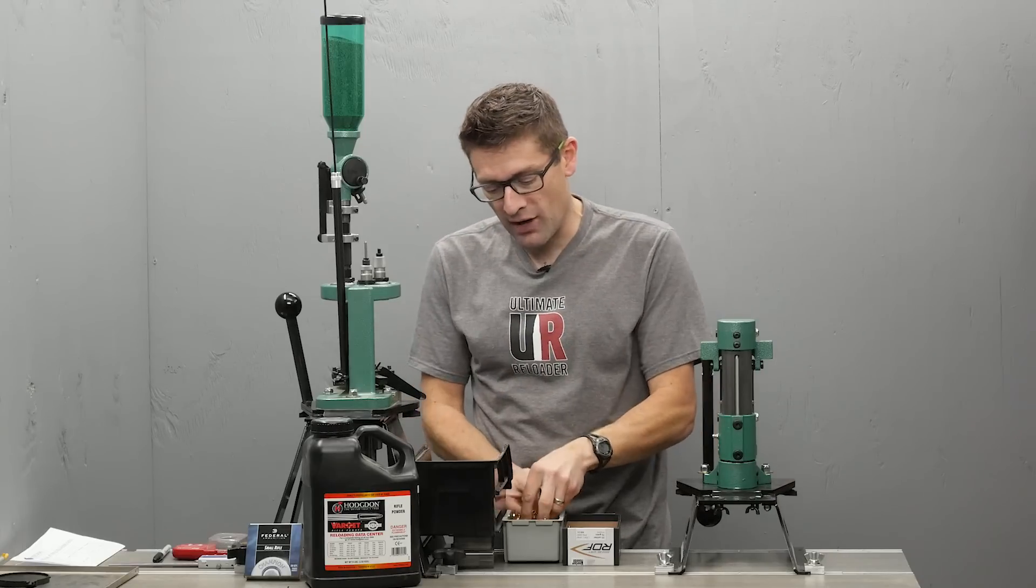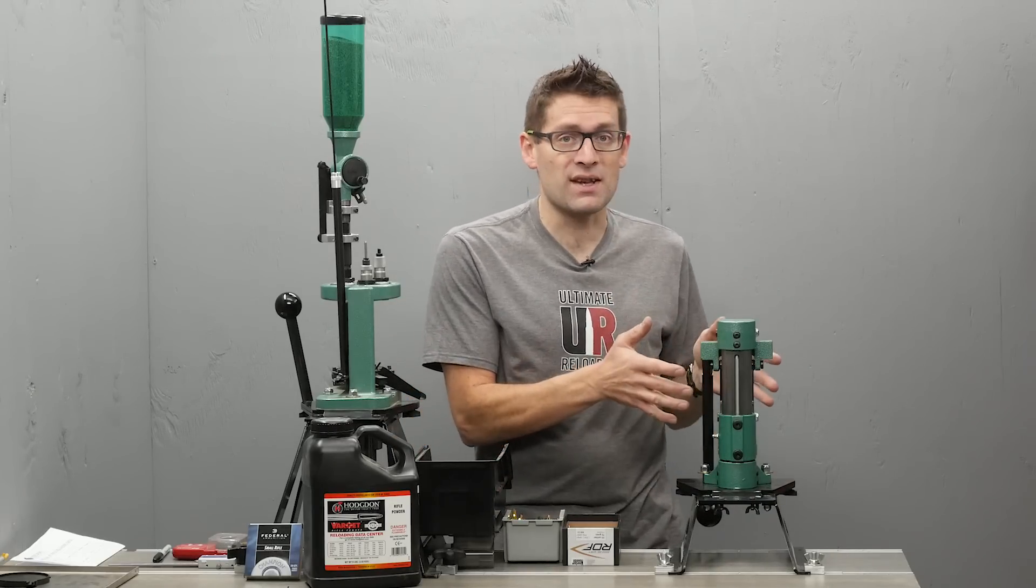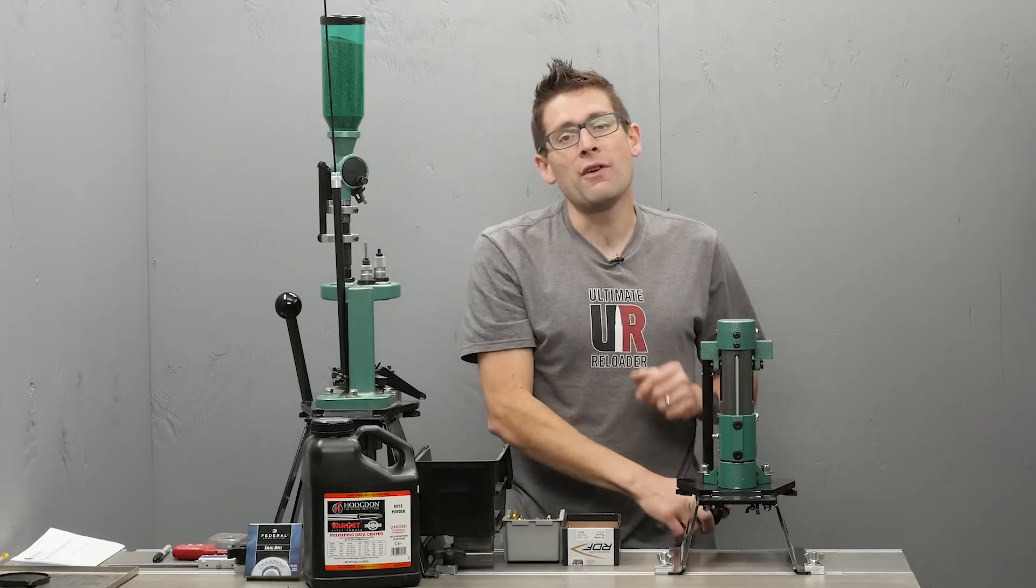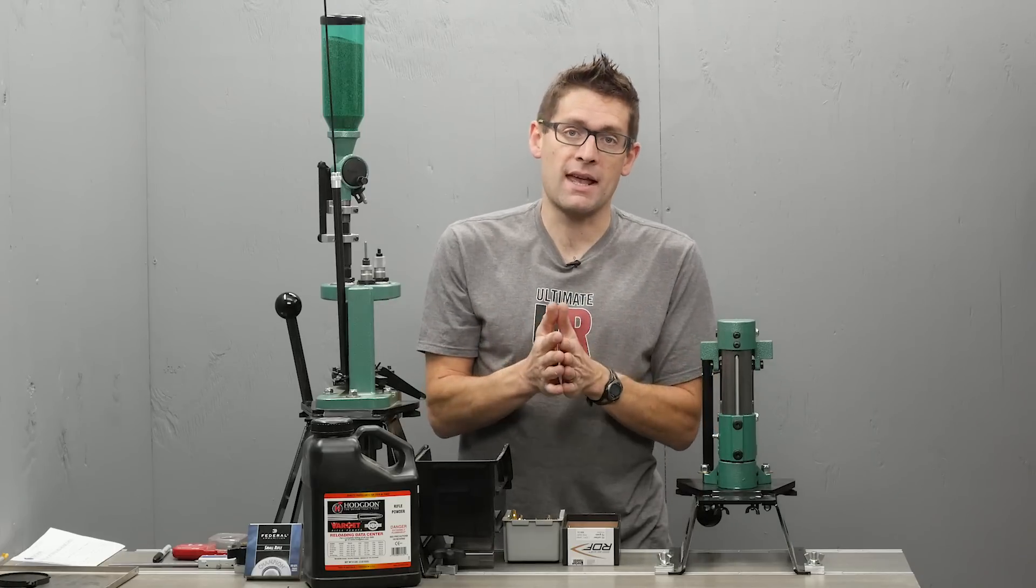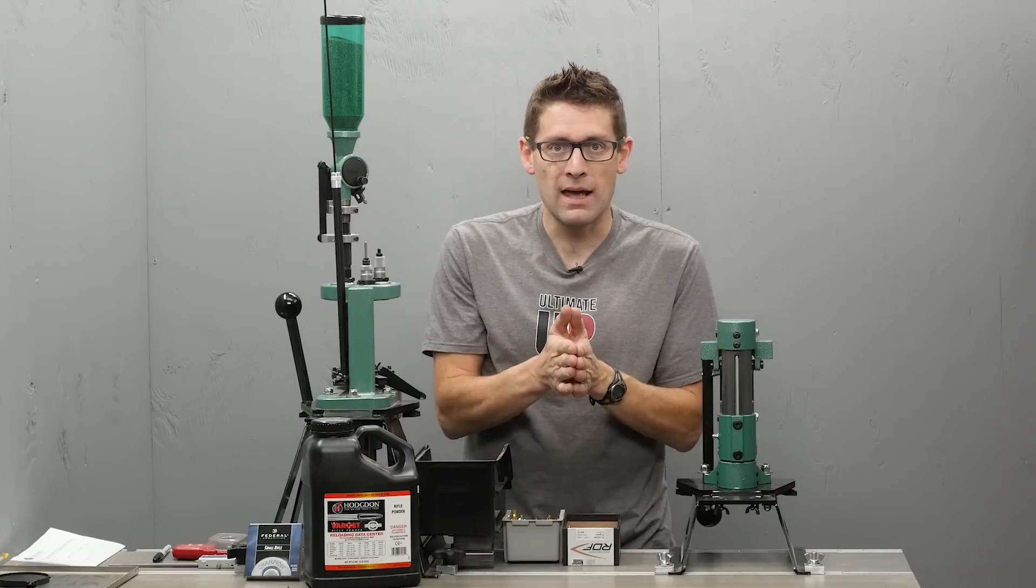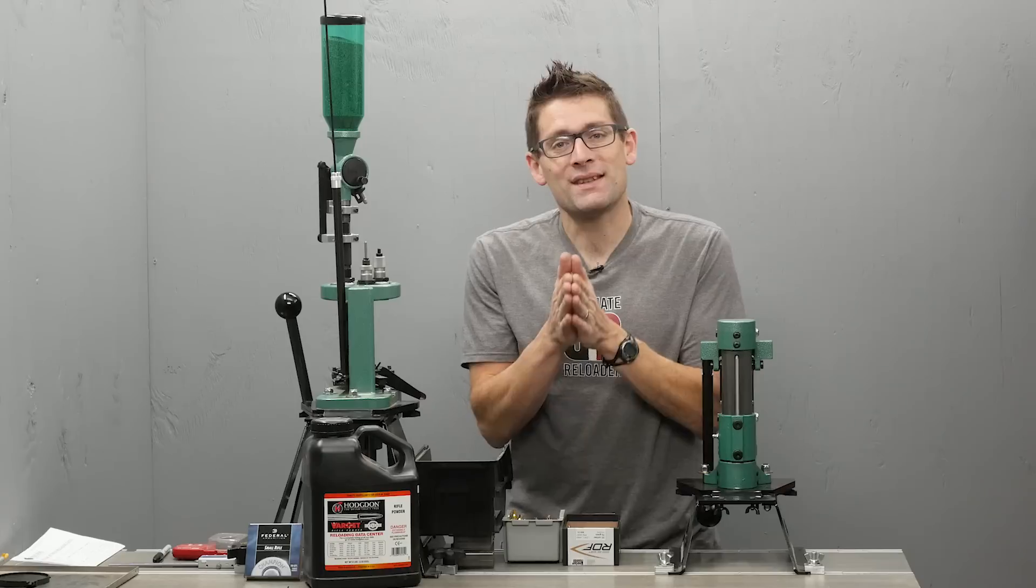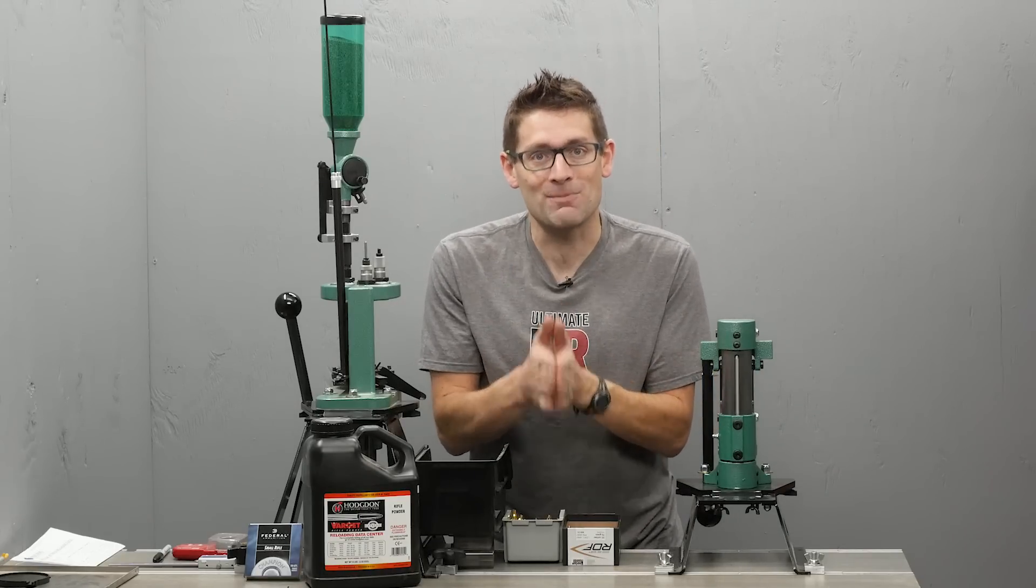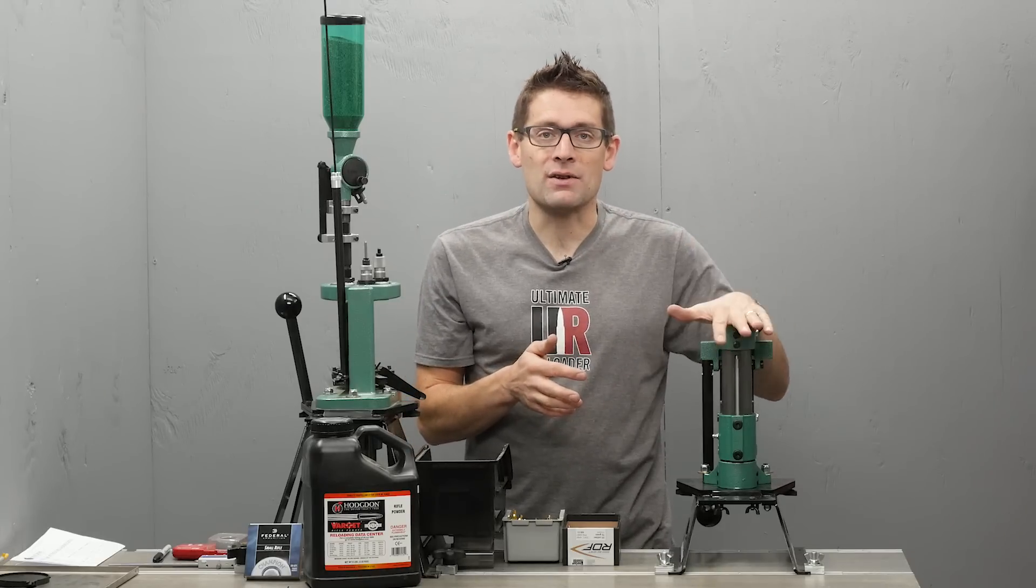Now I'm loading with new Starline brass here today, but what I plan to do is size on a single stage like the RCBS Summit here. Why? Because if I'm using small base dies, it's going to require a lot of force and I want to make sure that I have ultra precise control over the shoulder setback. Because I will be shooting it both in the AR-15 and in the bolt gun. This is precision long-range ammo. So my compromise on speed and precision is to size and deprime here on a single stage press.